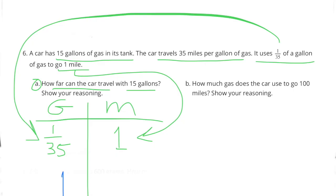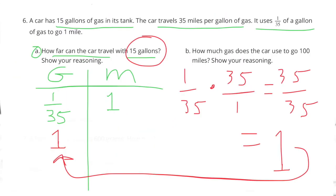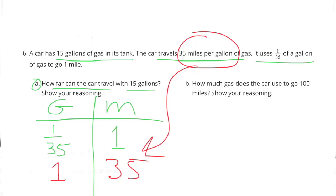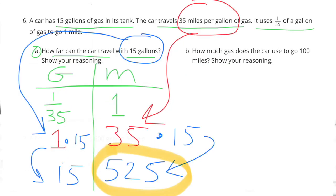They said that the car uses 1/35th of a gallon of gas to go 1 mile. If we multiply that 1/35th by its reciprocal, 35 over 1, we would get 35/35ths, which is equal to 1 full gallon. If we multiplied the left side by 35, we have to multiply the right side by 35. So 1 times 35 equals 35. They also told us that the car travels 35 miles per gallon. Now we need to multiply it by 15. So 1 times 15 is 15, and 35 times 15 is 525. So the car can travel 525 miles on 15 gallons of gas.